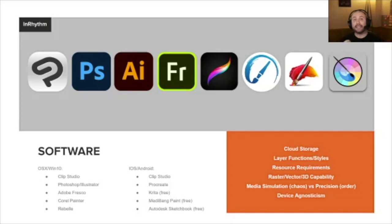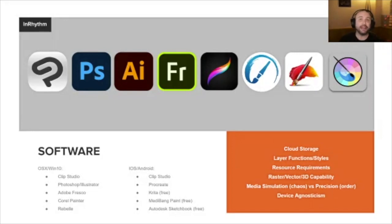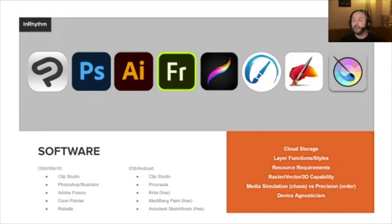Fresco simulates different types of watercolor, oil, acrylic, and ink. So if you want to paint but don't want to spend $300–$400 on oil paints, and you've got an iPad and a pencil, it comes with your app subscription. Other options I recommend are Procreate, and if you're on a real budget, Krita, Medibang, and Autodesk Sketchbook — which has a free version.